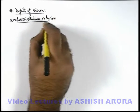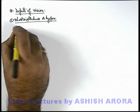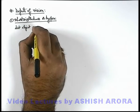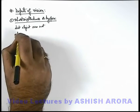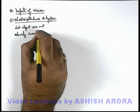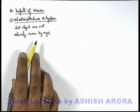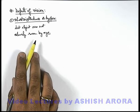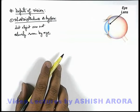Myopia is a defect of vision in which distant objects — objects placed very far away from the human eye — are not clearly seen by the eye. This is because the eye lens fails to focus the image of a distant object on the retina. Here you can see the realistic situation of a human eye.